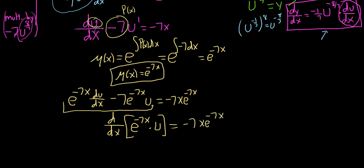We can verify this using the product rule: d/dx[e^(−7x)·u] = (derivative of first)·(second) + (first)·(derivative of second) = −7·e^(−7x)·u + e^(−7x)·(du/dx). That matches exactly what we have on the left side. So it checks out.